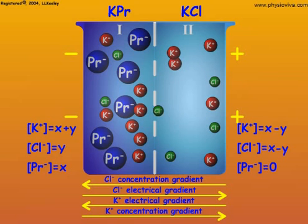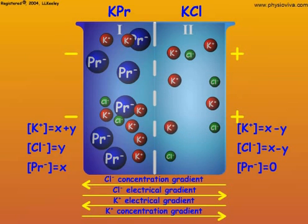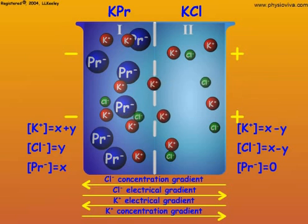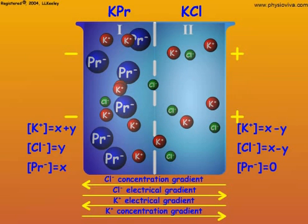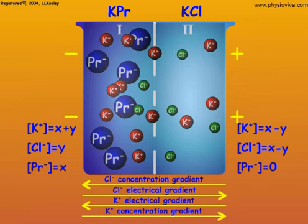Potassium ions and chloride ions move back and forth between sides 1 and 2 in response to the competing electrochemical gradients so that each side remains electrically neutral within itself due to equimolar concentrations of both cations and anions.